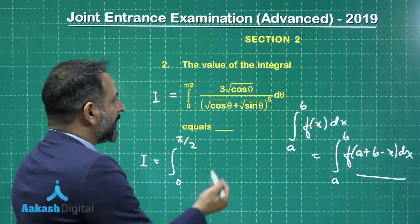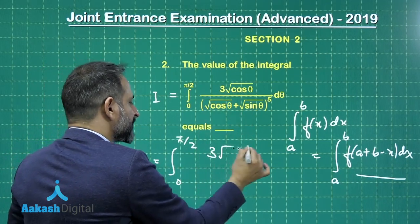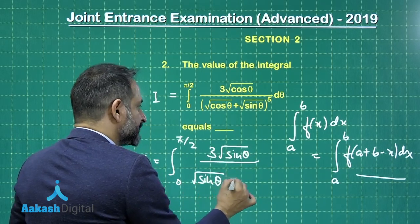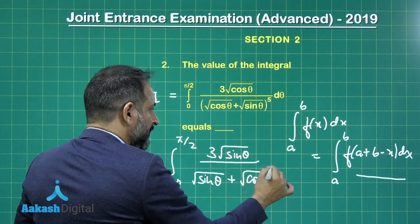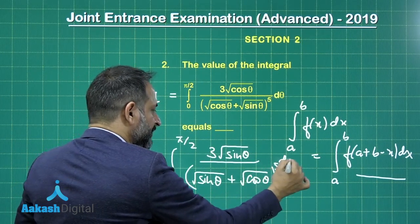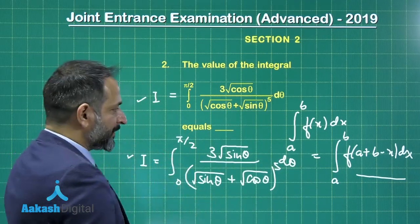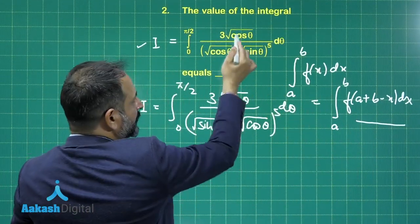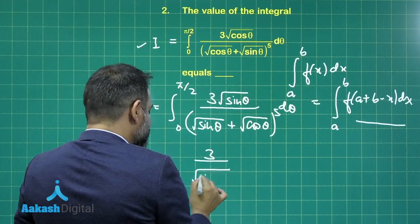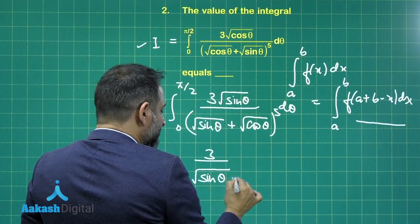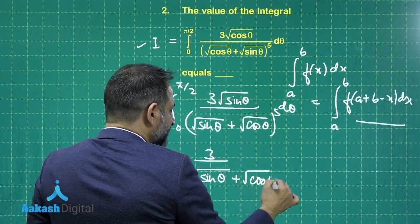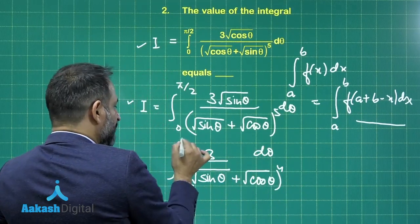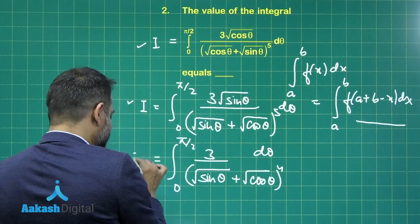Since A plus B is π/2, substituting π/2 − θ means cos θ becomes sin θ and sin θ becomes cos θ, raised to the power 5, dθ. Adding this transformed integral to the original I, in the numerator we have cube root of cos θ plus cube root of sin θ. This simplifies to 3 divided by (cube root of sin θ plus cube root of cos θ) raised to power 4, integrated from 0 to π/2, which equals 2I.